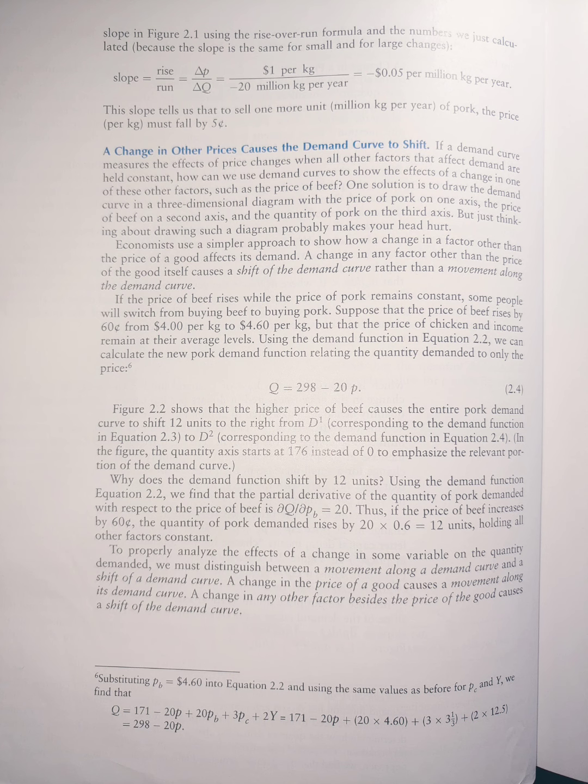Why does the demand function shift by 12 units? Using the demand function equation 2.2, we find that the partial derivative of the quantity of pork demanded with respect to the price of beef is italics D capital Q over italics D P sub B, which equals 20. Thus, if the price of beef increases by 60 cents, the quantity of pork demanded rises by 20 times 0.6, which equals 12 units.